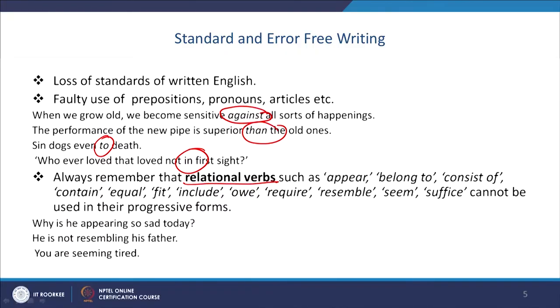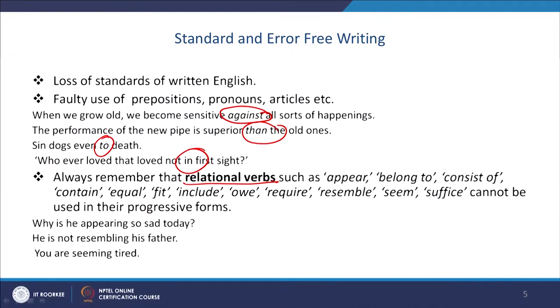Now, most of the time we come across the faulty use of verbs — these are called troublesome verbs. There are five categories of troublesome verbs. The first is relational verbs. People have been found making very inappropriate use of them. For example, verbs like 'appear,' 'belong to,' 'consist of,' 'equal,' 'include,' 'require' — all these verbs cannot be used in the progressive forms.